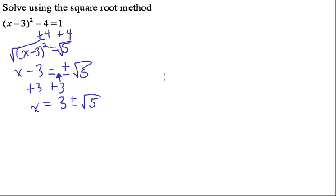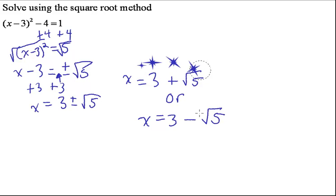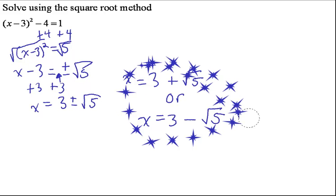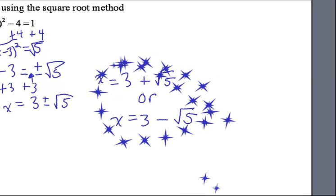So what does that mean? Well, it means that x could equal 3 plus the square root of 5, or x equals 3 minus the square root of 5. And if I wanted to see what those were as a decimal, I could plug them into my calculator to get an approximation. And that's using the square root method! All right, and you can do it.